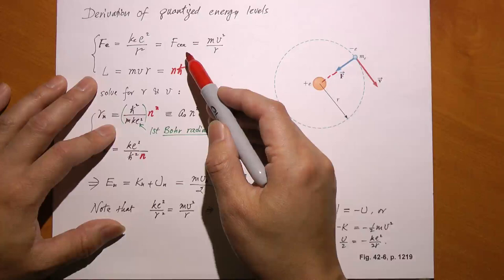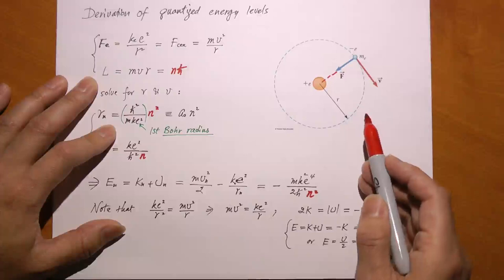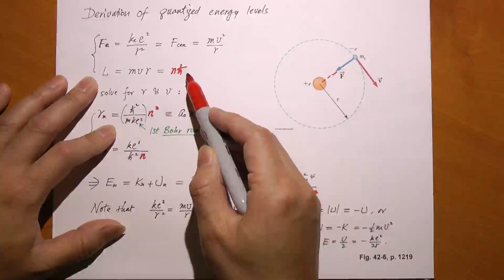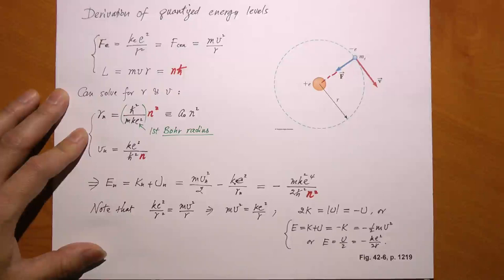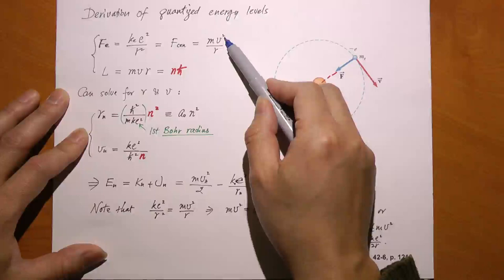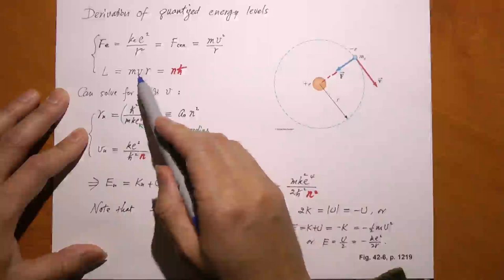Where does quantum mechanics come in? The next equation says the angular momentum of this electron cannot be just any value. Its magnitude, equal to mvr, has to be a multiple of h-bar: mvr = n·h-bar, where n is a quantum number 1, 2, 3, 4, and so on. I have two equations and two unknowns—r and v. Given two equations and two unknowns, I can find them. Square both sides of the angular momentum equation to get v², then substitute into the force equation to solve for r.